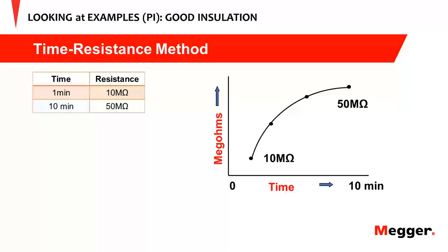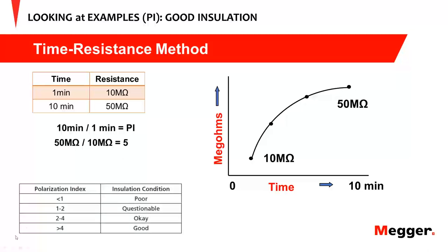Looking at an example of a good insulation polarization index: I got 10 megaohms at the one-minute value, and after 10 minutes I got 50 megaohms. My resistance increased. So PI = 10 minutes / 1 minute = a ratio of 5. Referring to the PI table, above 4 means your insulation is good. You may ask why — let me explain using the current components.